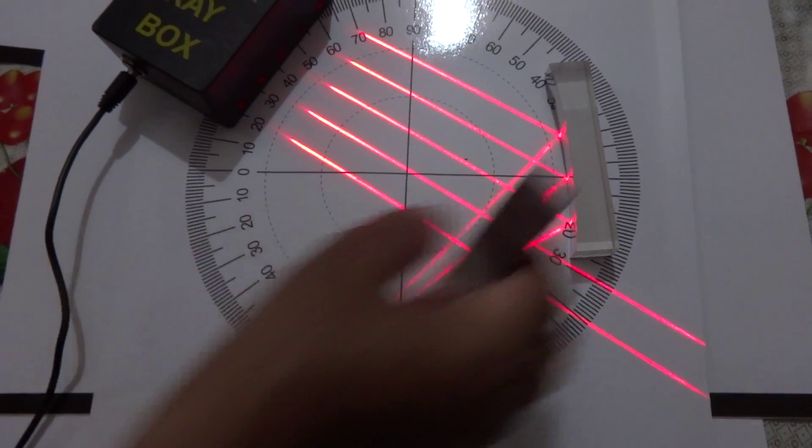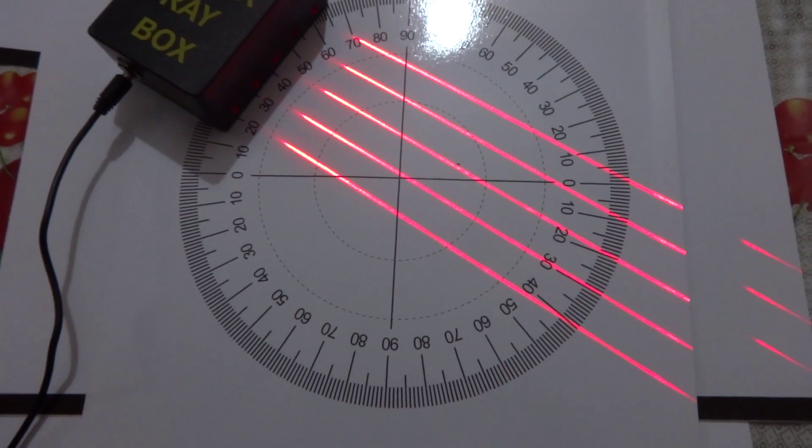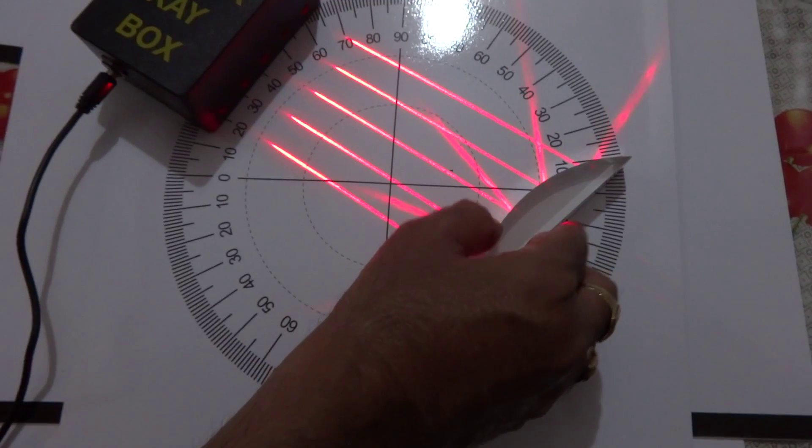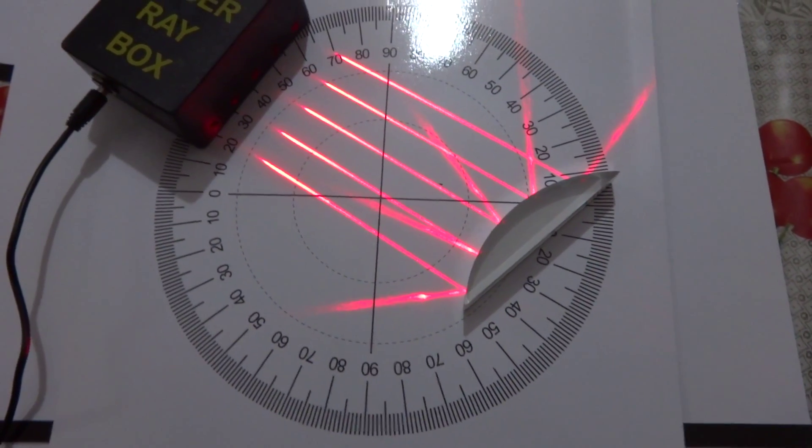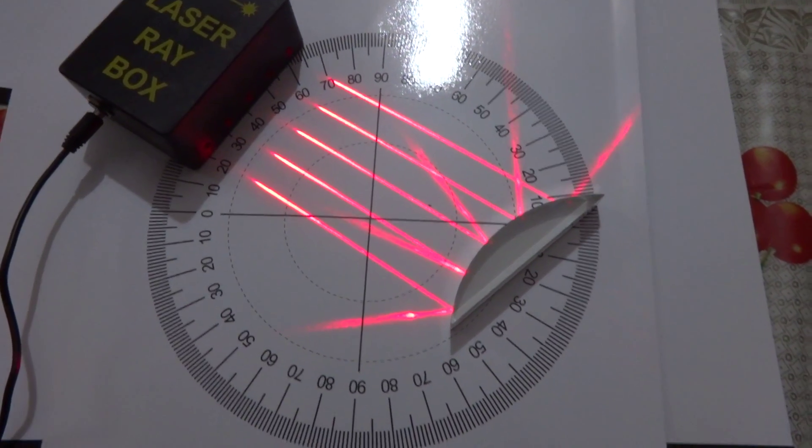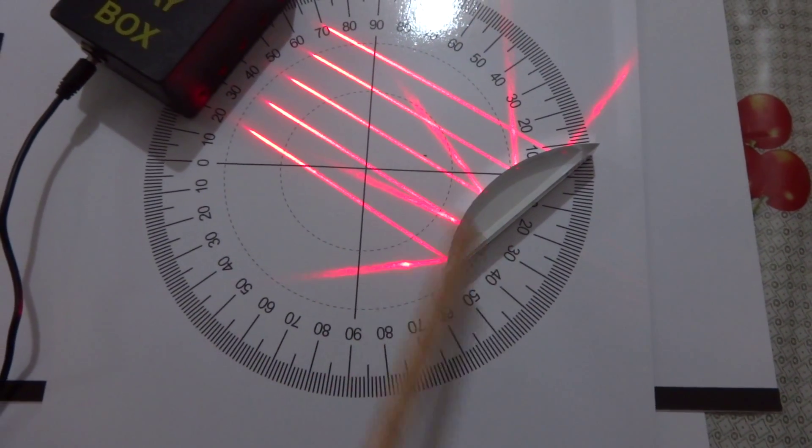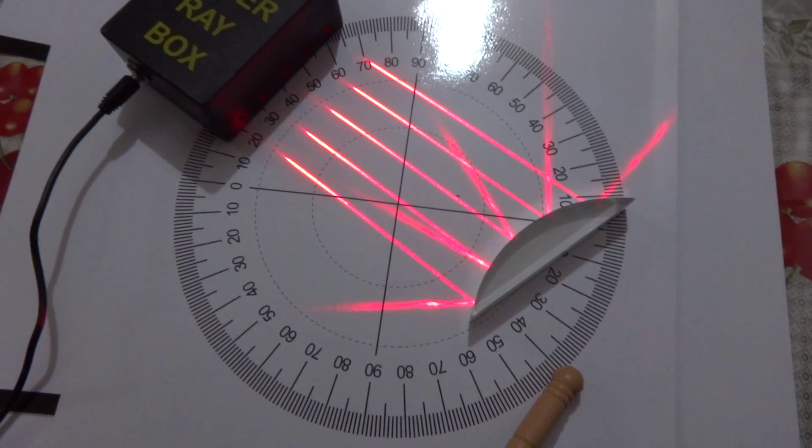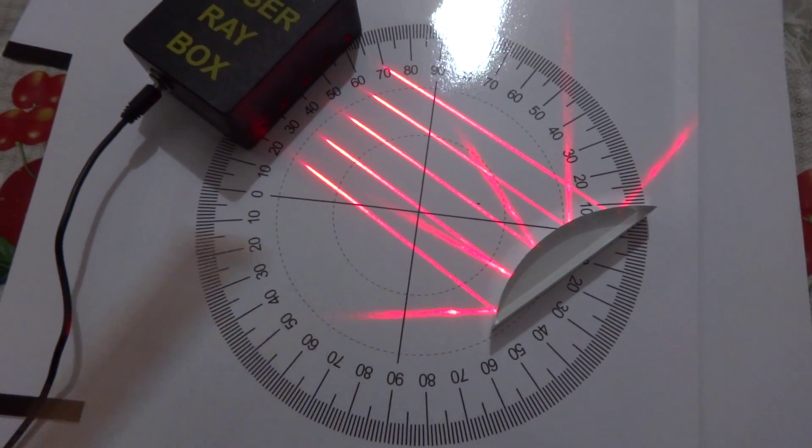Whereas, if you observe the other nature of this one, that is convex mirror, all the rays, when they are extended backwards, suppose if I extend all these rays, then they will be meeting somewhere here. That is called virtual focus.